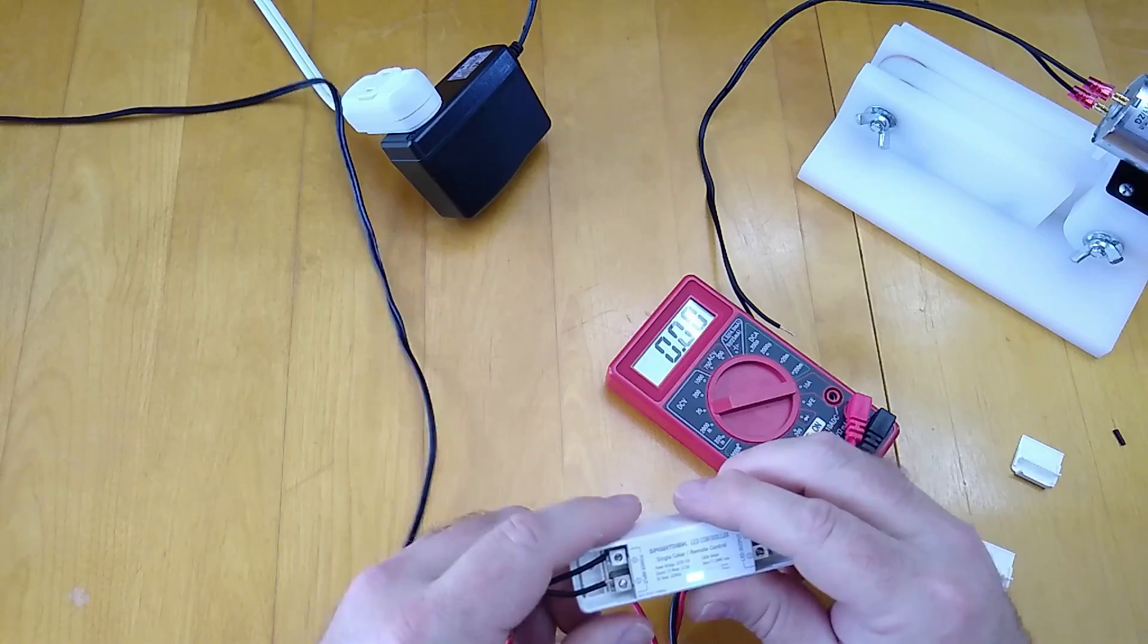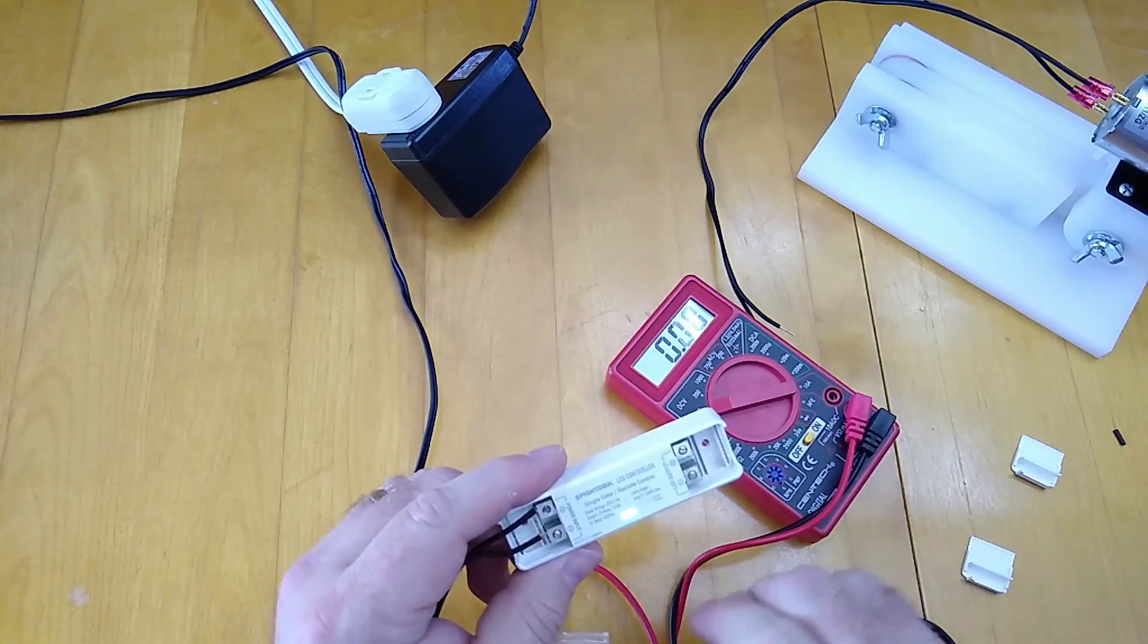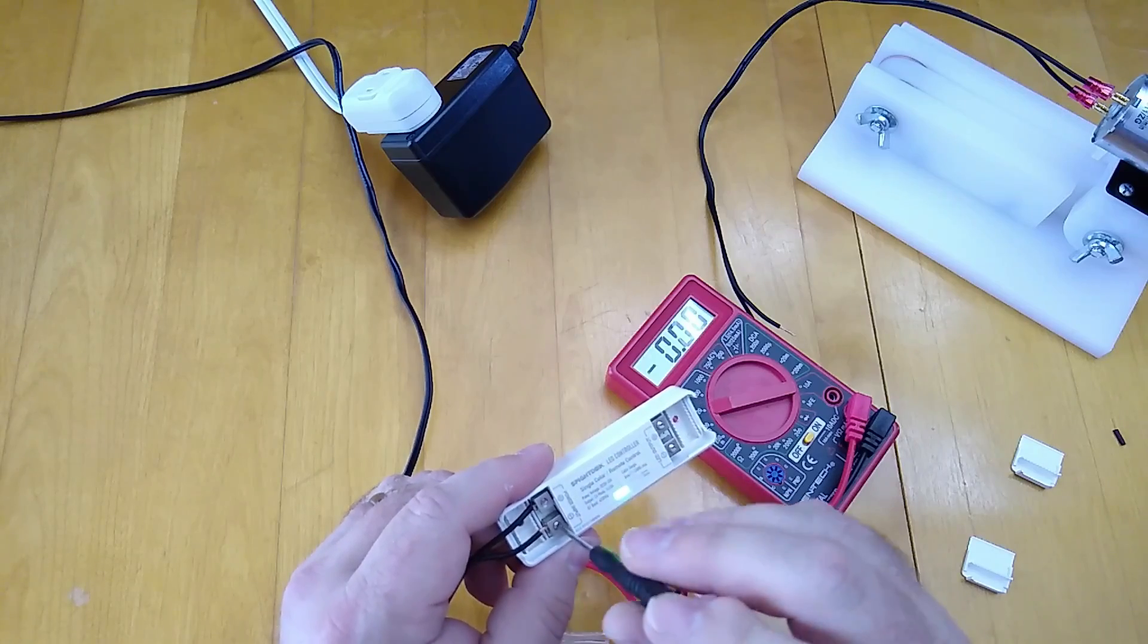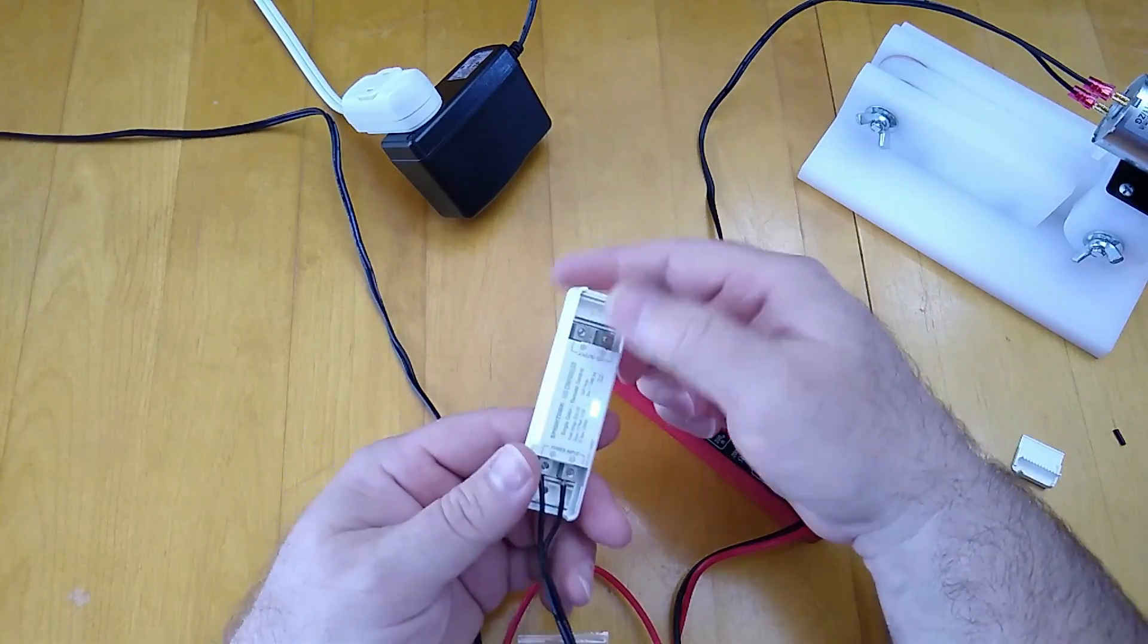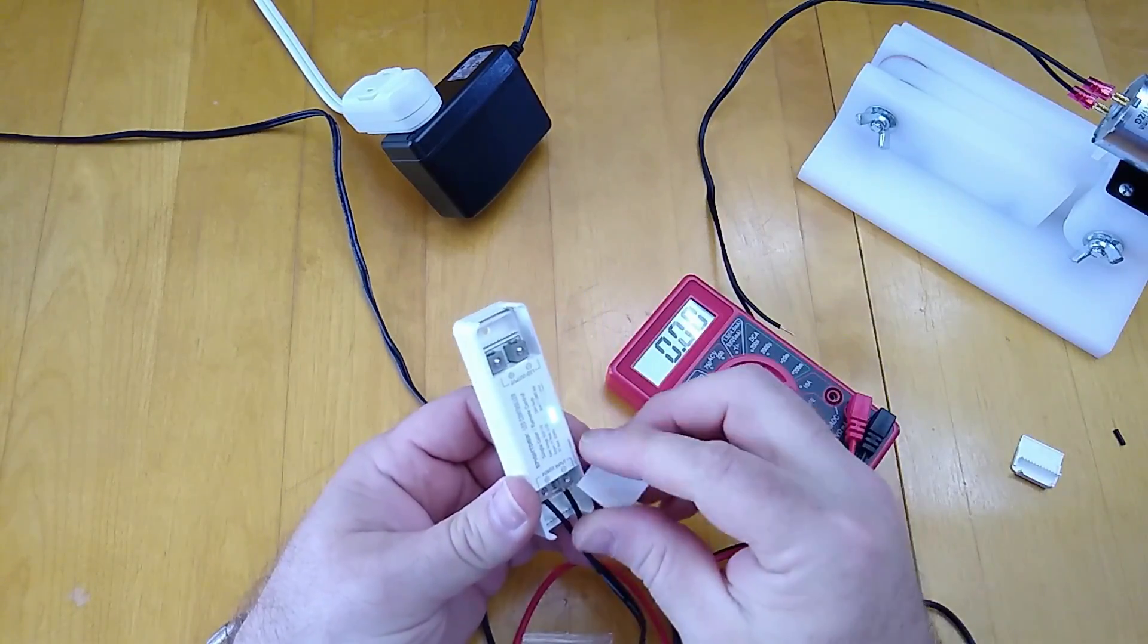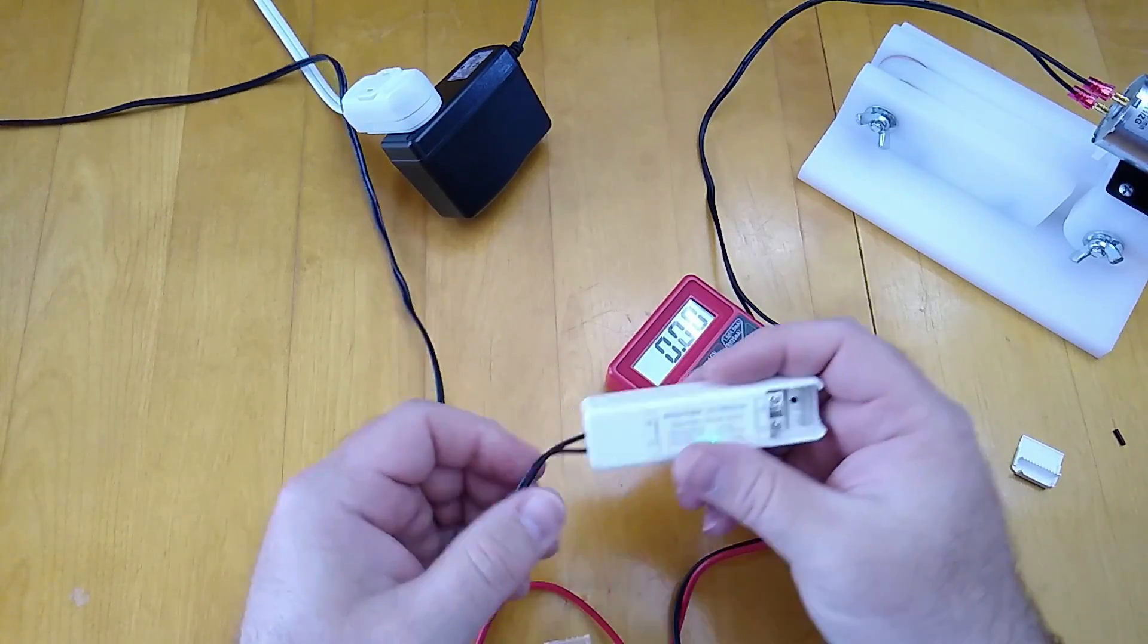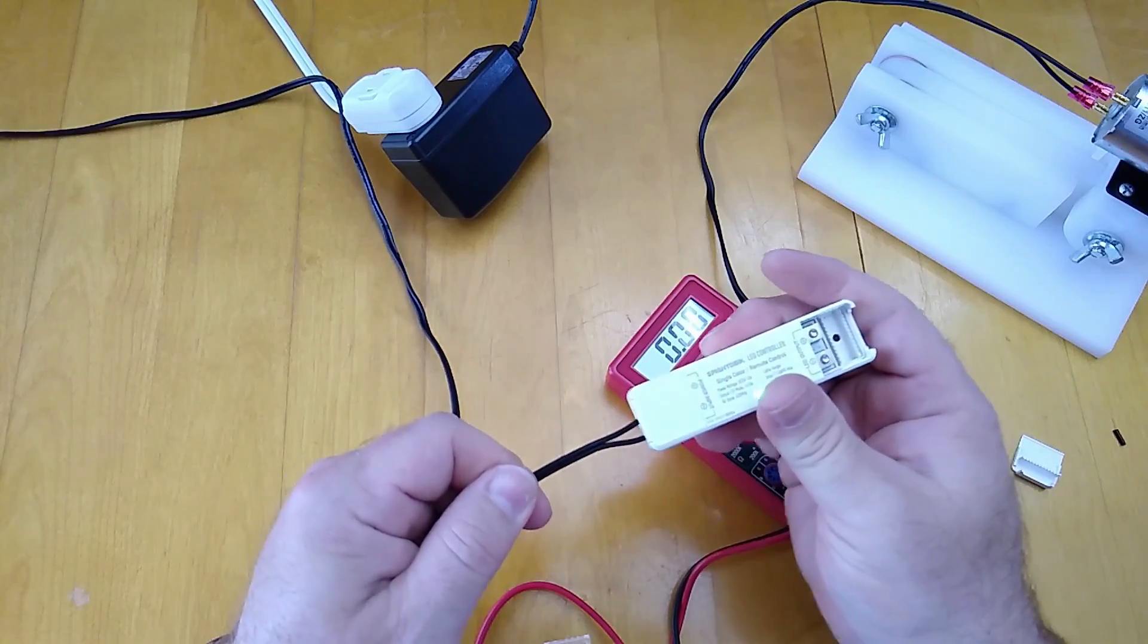I make sure I've got them positive to positive and negative to negative on the pulse width modulator input side. And even though this is an LED dimmer, they work using pulse width modulation. That's how LEDs are dimmed, so this is in fact a pulse width modulator of sorts.